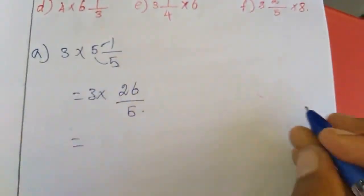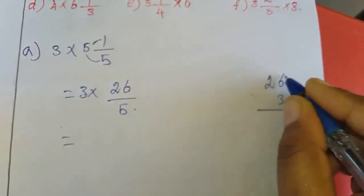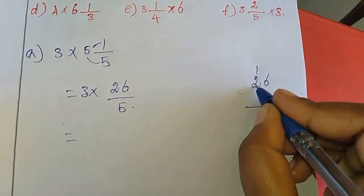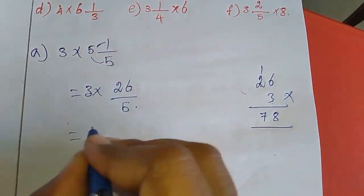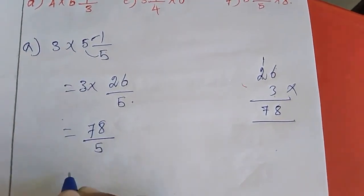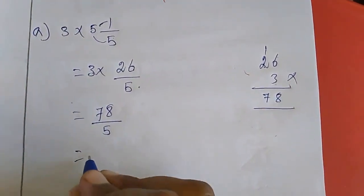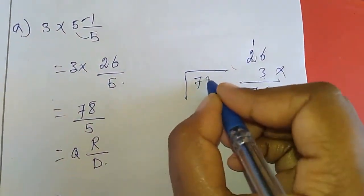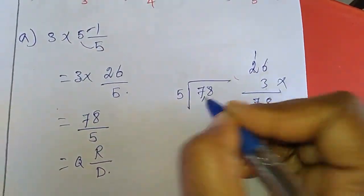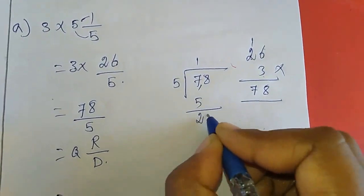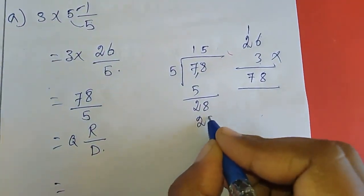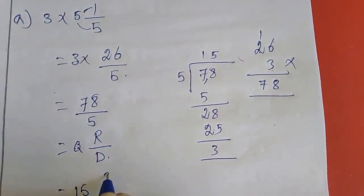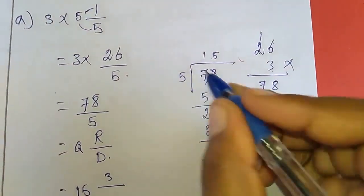I am going to multiply 3 into 26. 6×3 is 18, carry 1. 2×3 is 6, plus 1 is 7 — so 78. So 78 divided by 5. This one we want to change as a mixed fraction. Here you have to write: quotient, remainder, and denominator. So 78 divided by 5: 5×15 is 75, remainder is 3. Quotient is 15, remainder is 3, denominator is 5. So the answer is 15 and 3 by 5.